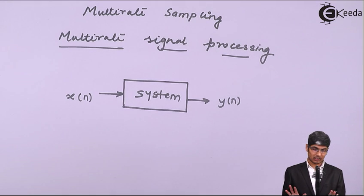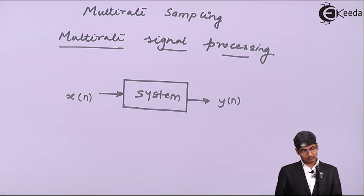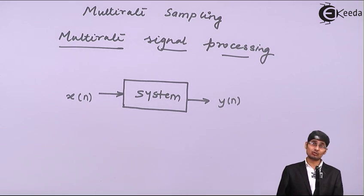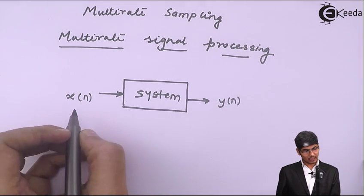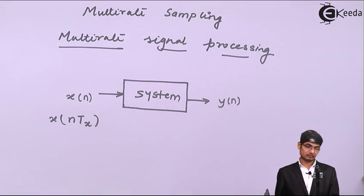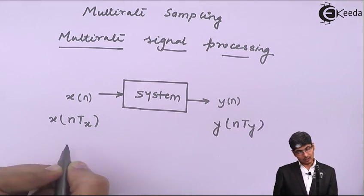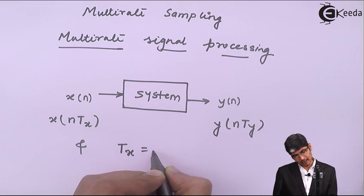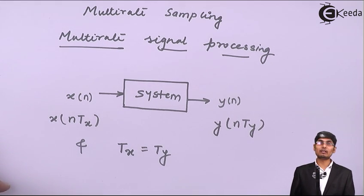Now here I have not mentioned or assumed anything about the sampling rate at the input and output of the discrete time signal being the same. That means I am considering this signal as x(n·Tx) and the output signal as y(n·Ty), and we assume that Tx is equal to Ty — that is, the input sampling rate and the output sampling rate are the same.